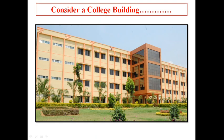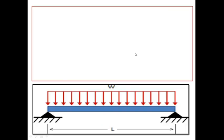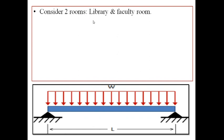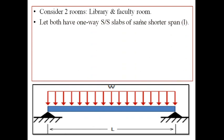Let me consider one college building with two rooms: one is a library and another is a faculty room. Both rooms have a one-way simply supported slab with the same shorter span L. If the library has a shorter span of 4 metres, the faculty room also has a shorter span of 4 metres — both are one-way simply supported slabs.